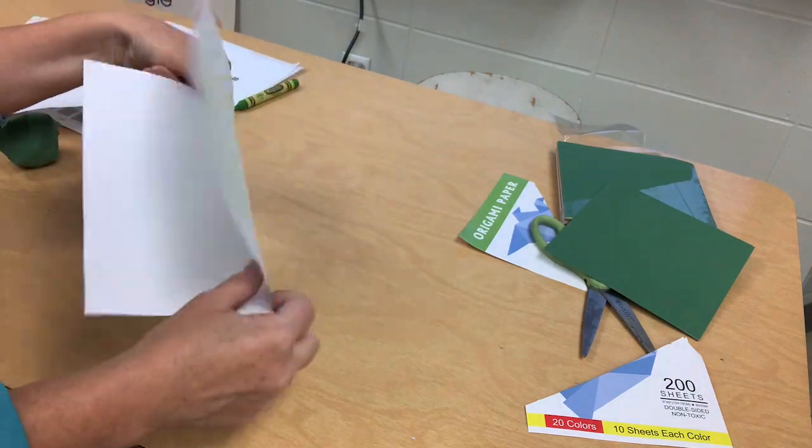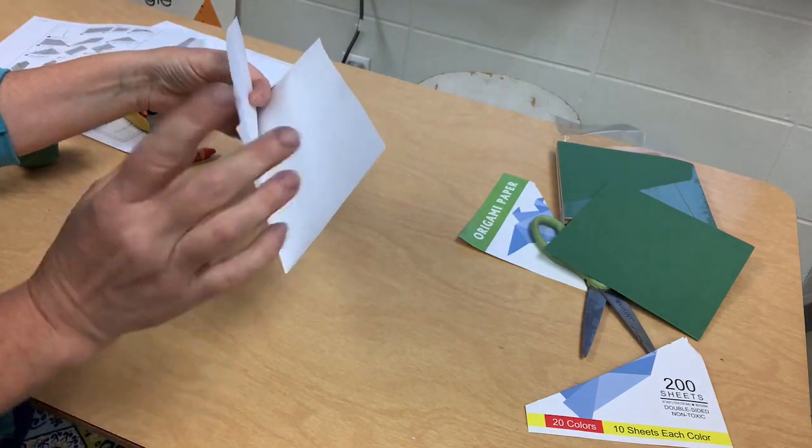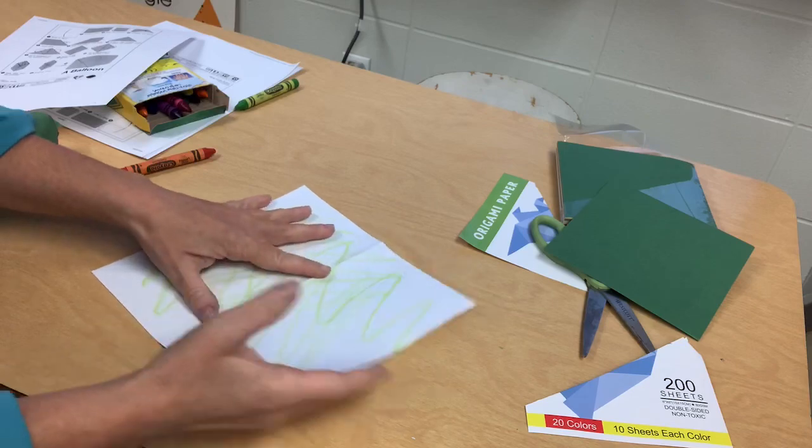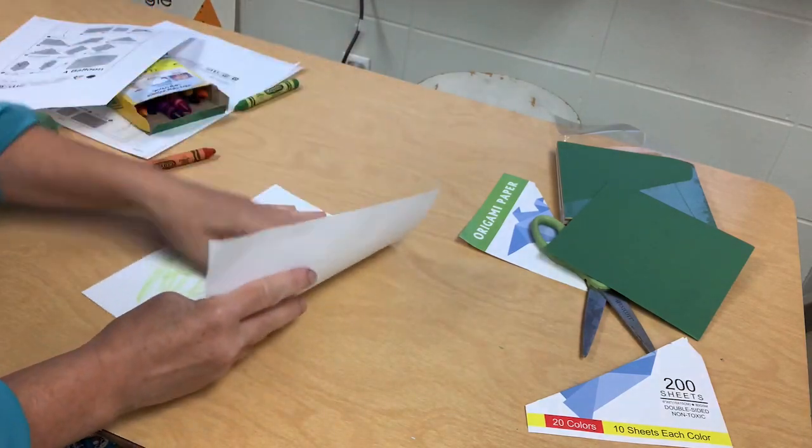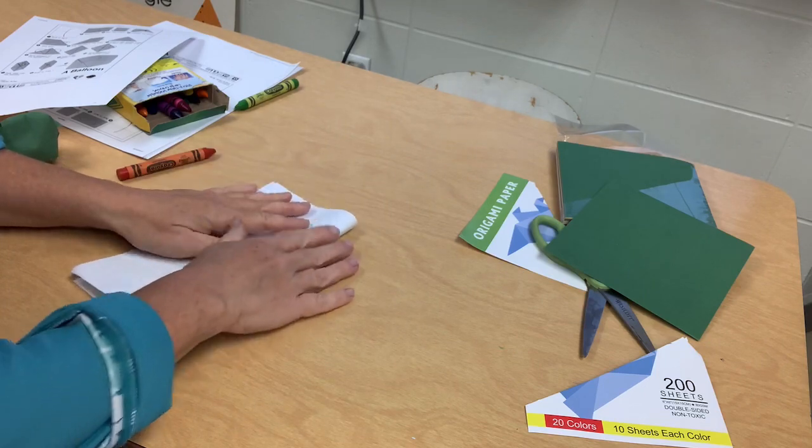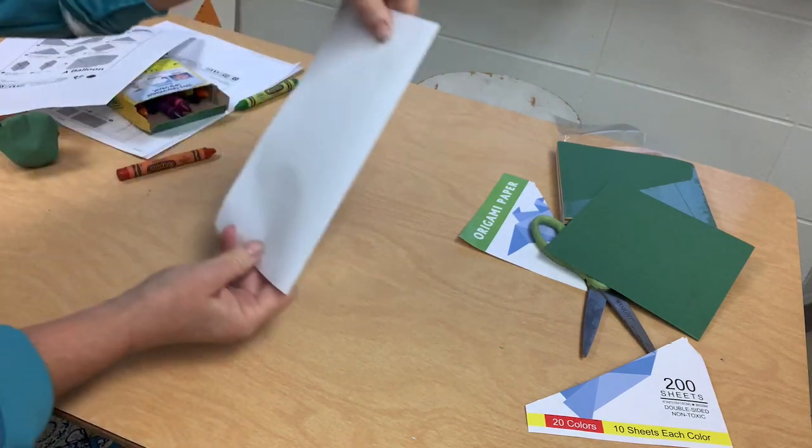If we turn it this way, that is called a valley fold. Now this is important. When you take this fold and you reverse it, that is called a reverse fold and we'll be doing a lot of reverse folds today.